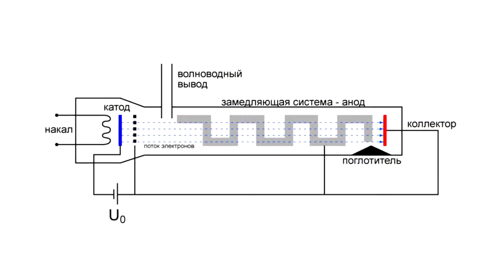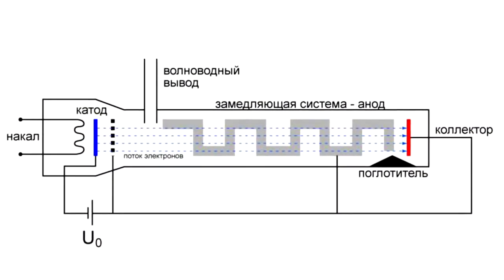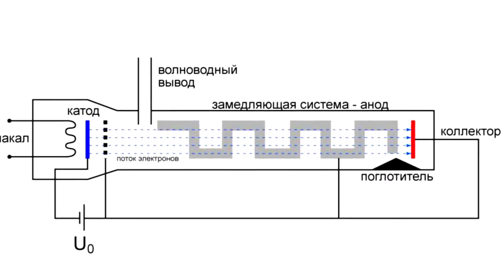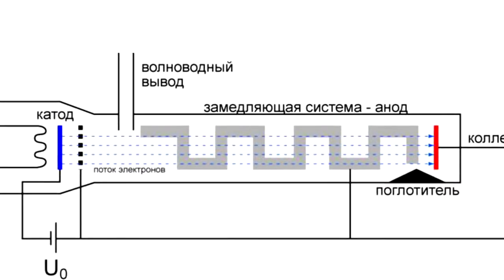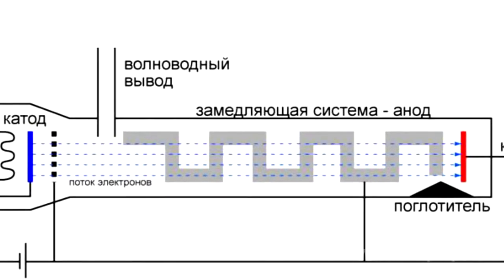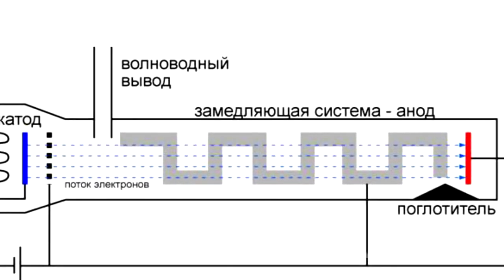Let us consider the construction of the O-type tube first. The source of electrons is an electron gun, in which a static electric field accelerates the electron beam and it moves straight towards the collector. The magnet focusing system provides the necessary cross-section of this beam. In the slowing wave system, the interaction between the electrons and the waves takes place. The slowing wave system has a periodic structure and represents waveguides with periodically varying parameters.